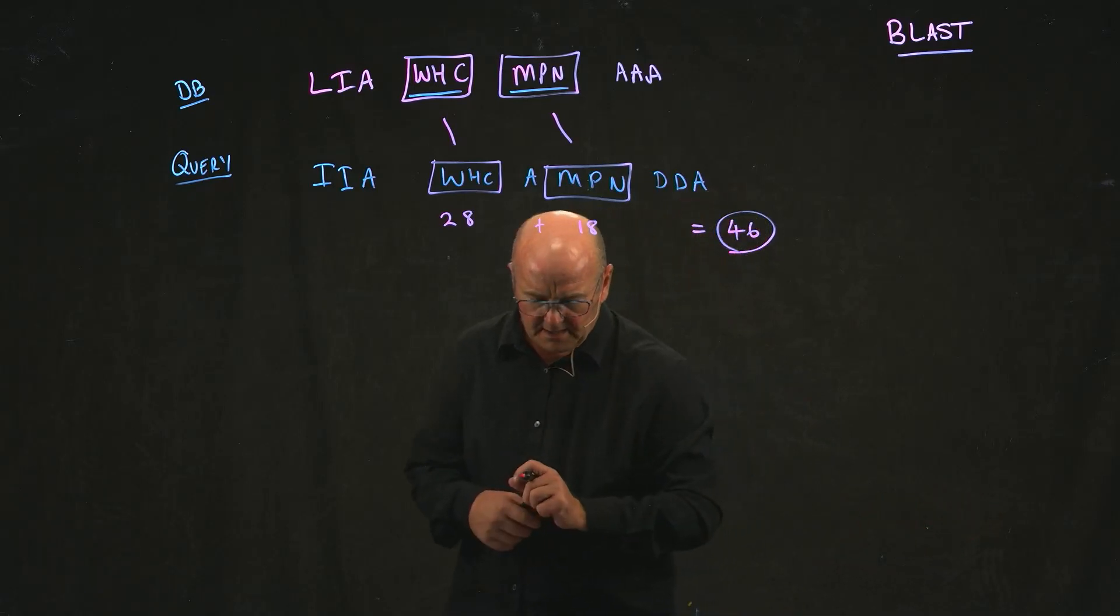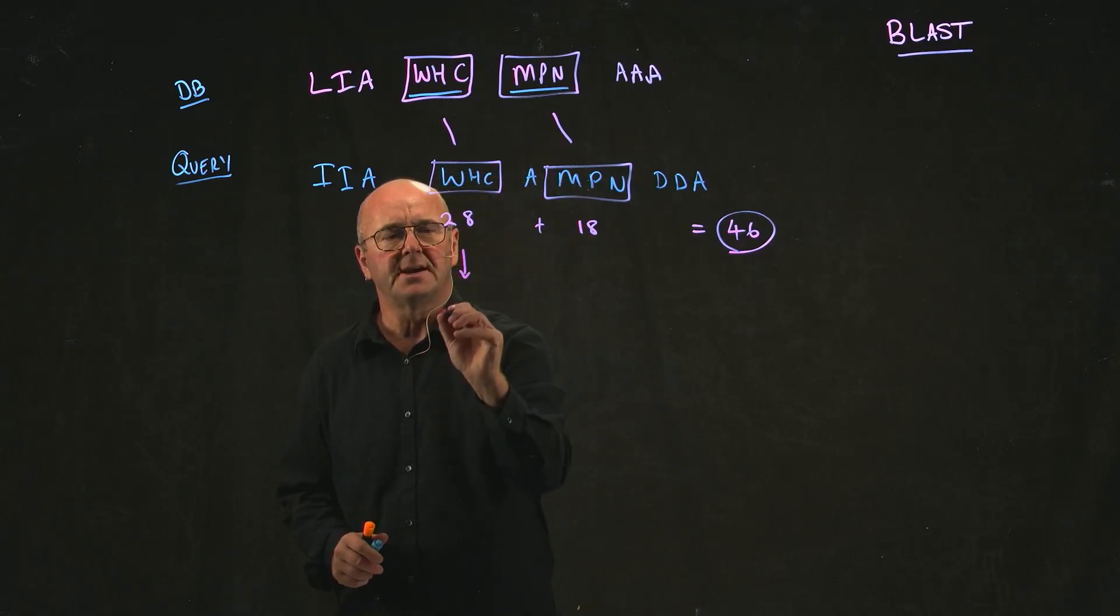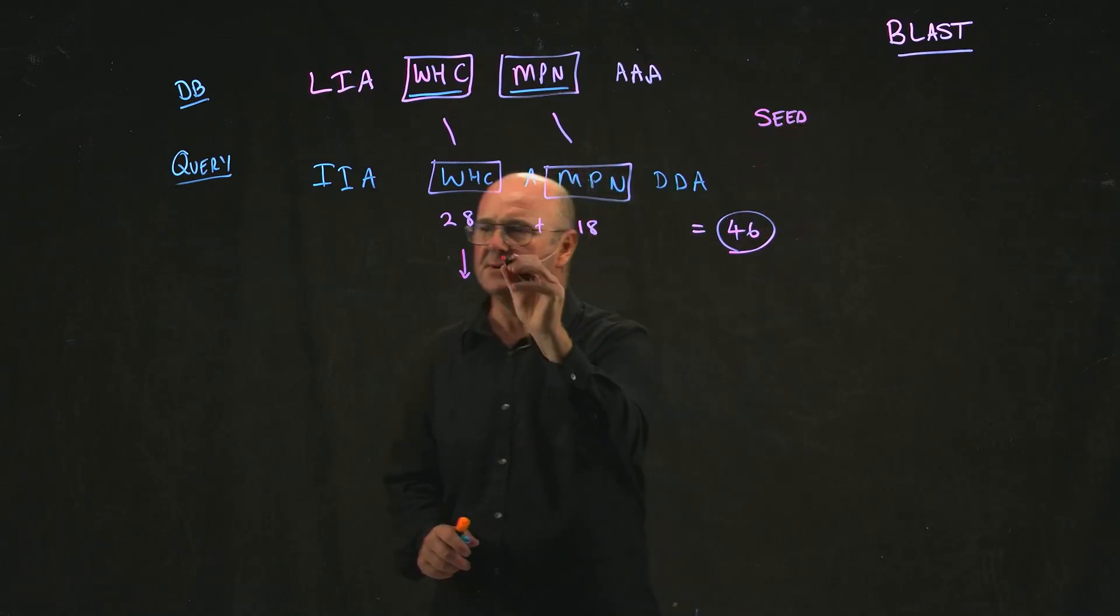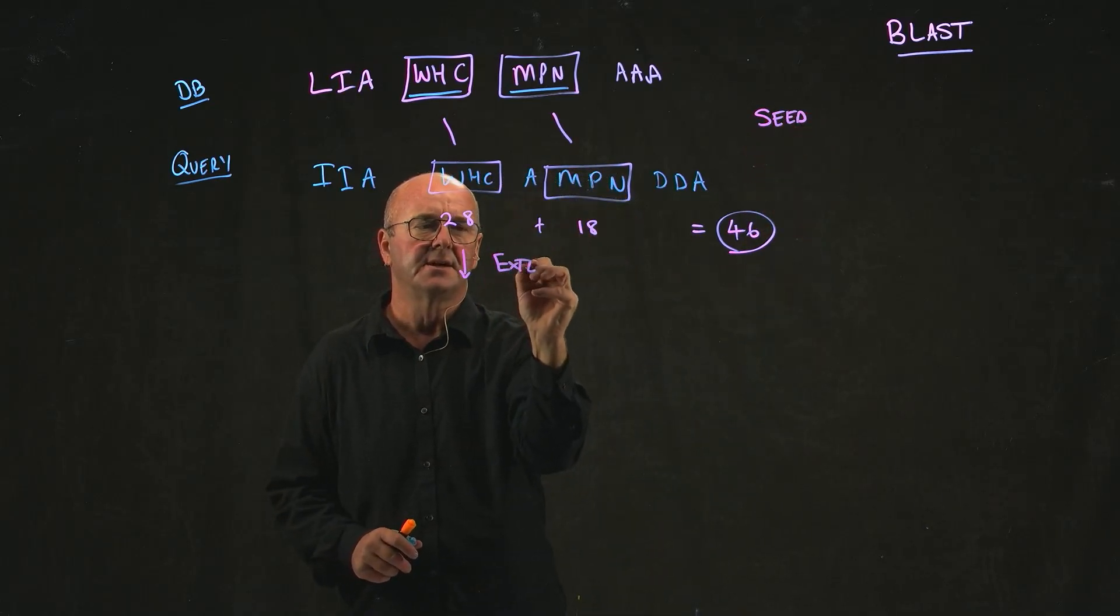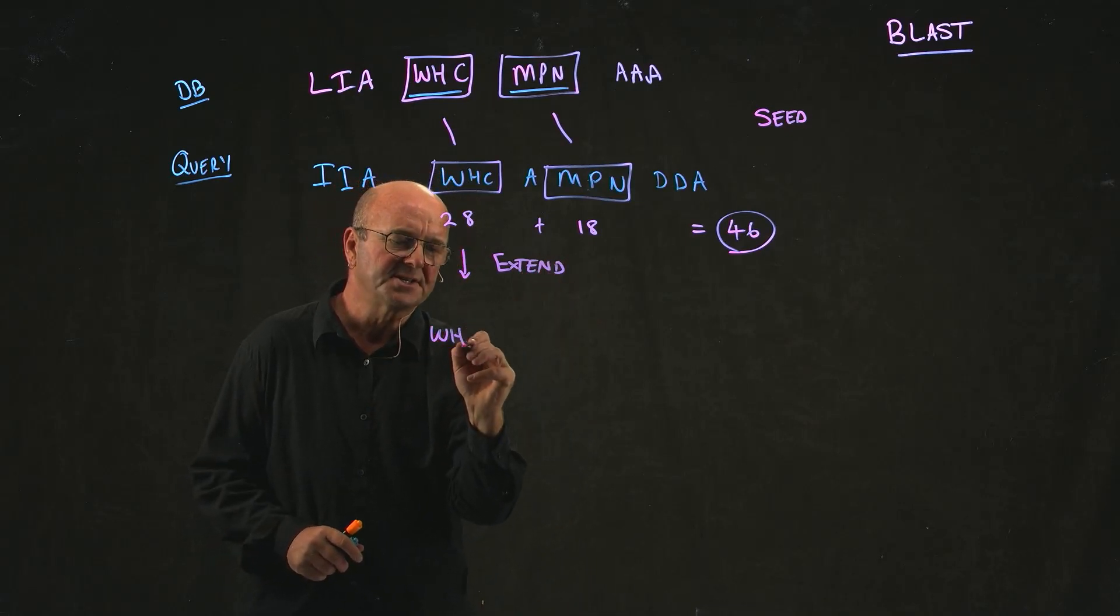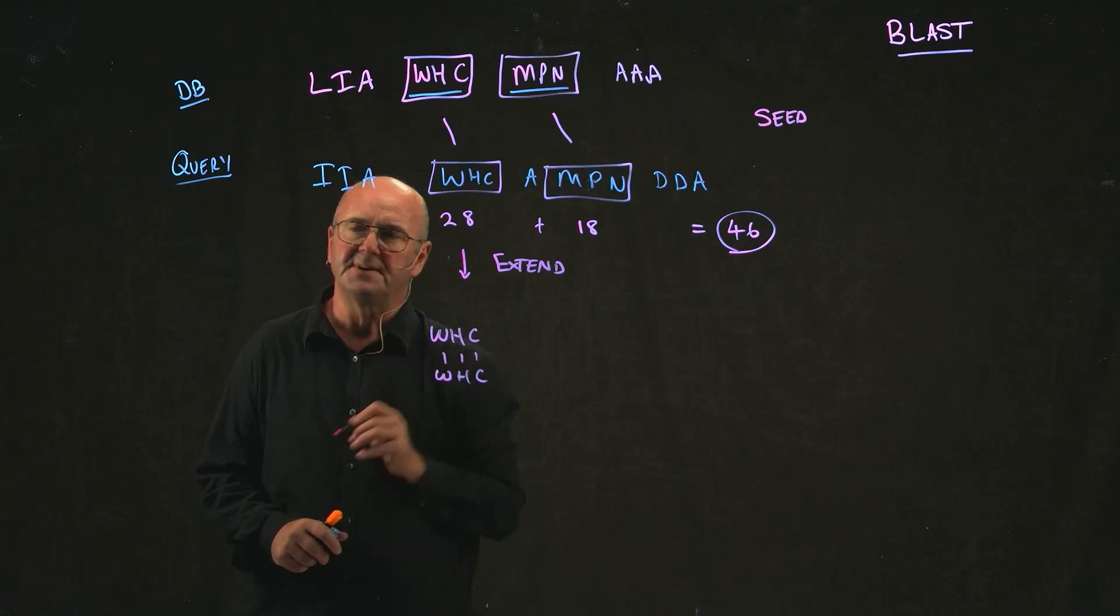If we decide to keep that score, then this is the step that's called the seed. Then we do the extend part. And what we do is we start with our WHC.